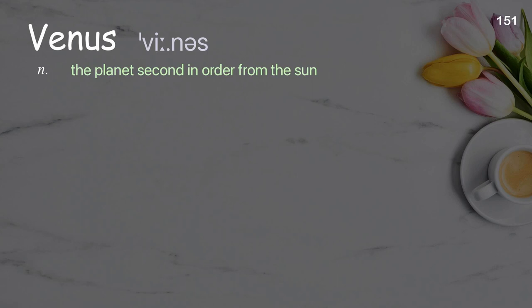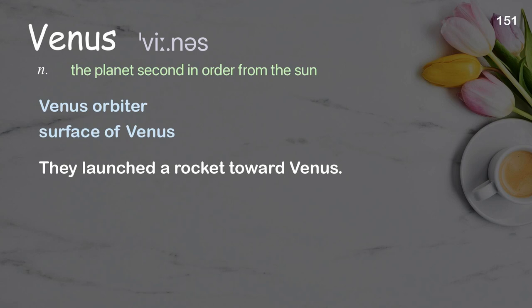Venus: The planet second in order from the sun. Examples: Venus orbiter, surface of Venus. They launched a rocket toward Venus.